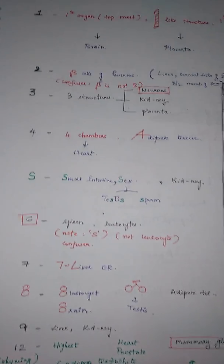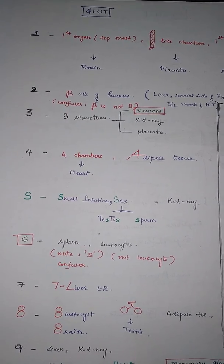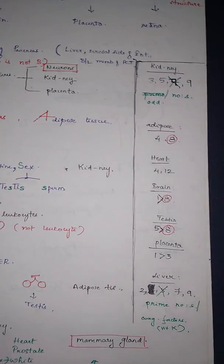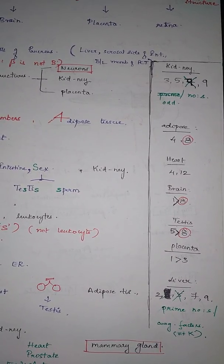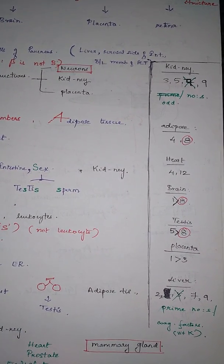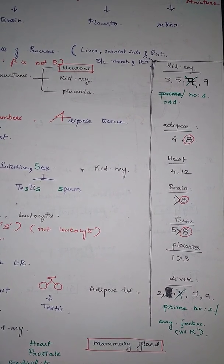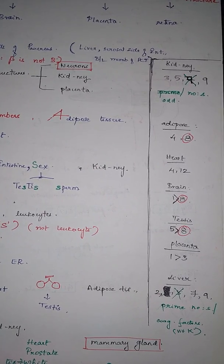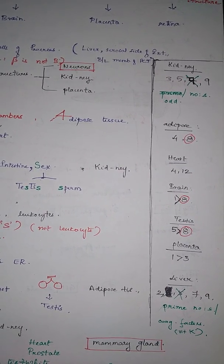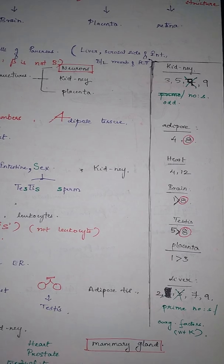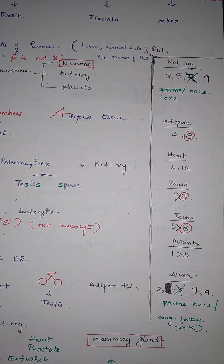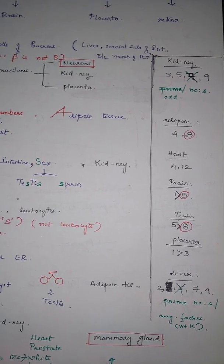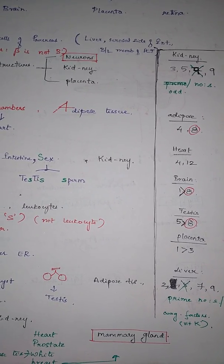Here, some of the structures are repeated with many GLUTs. So looking at those, here we have kidney, which has 3, 5, and 9 GLUTs. You can remember it like the odd kids, because kids are odd nowadays. And we have adipose tissue, which is 4 and 8.